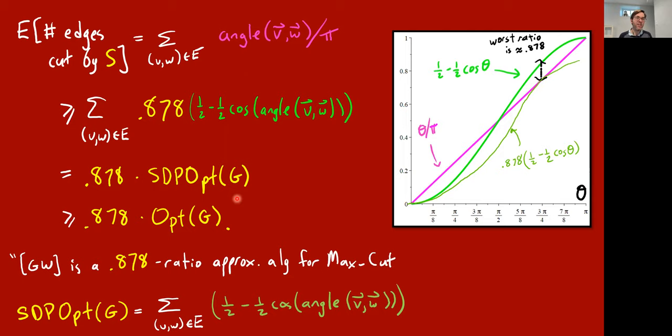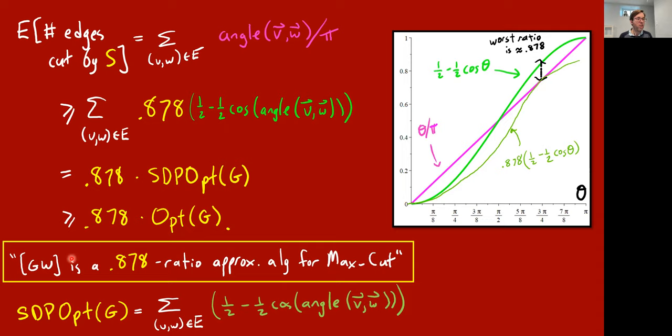This is the end of the analysis of the Goemans-Williamson SDP rounding algorithm. The GW algorithm is a 0.878-ratio approximation algorithm for max cut — in expectation, it gives you a cut whose value is at least 87.8% of the maximum cut. You can run this many times, take the best cut, and you'll get this to hold not just in expectation but with high probability. You can even derandomize this using a Nisan small-space generator and some other ideas.